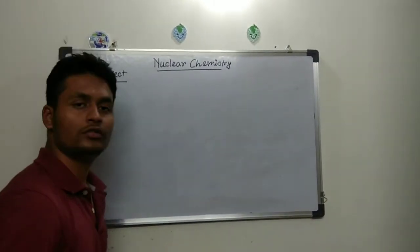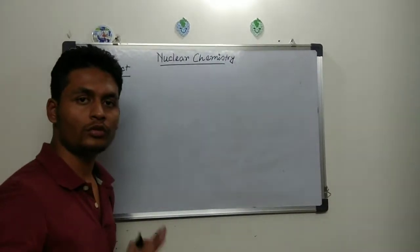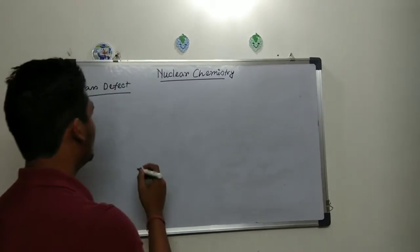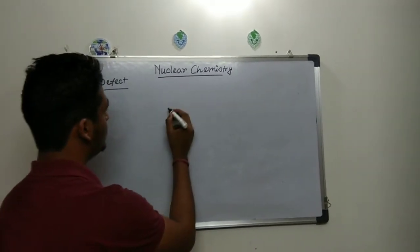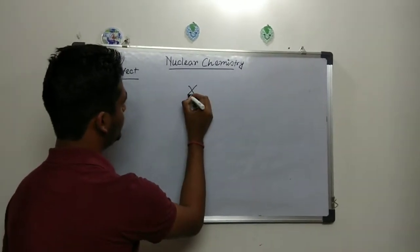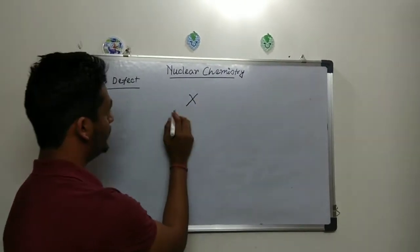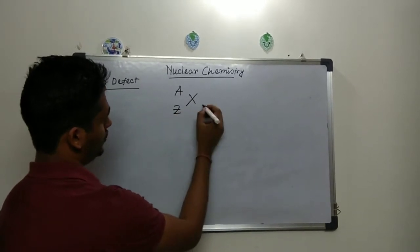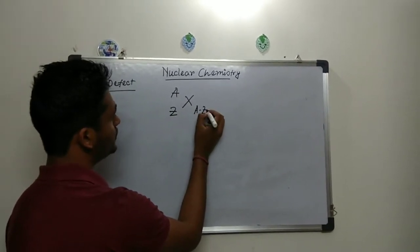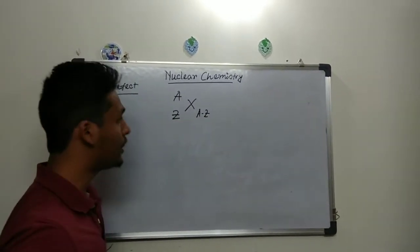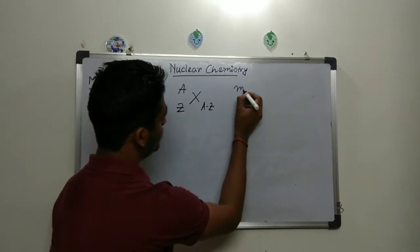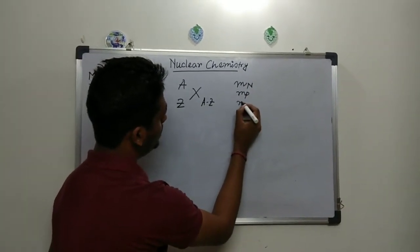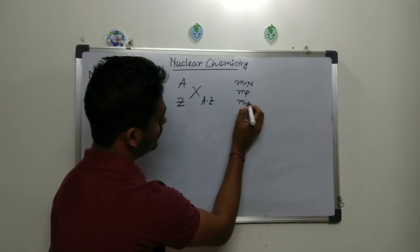Welcome. Let's talk about mass defect. Take a simple example of a nucleus X with mass number A and atomic number Z. The neutron number will be A minus Z. We consider the mass of neutron, mass of proton, and mass of electron — these three quantities.